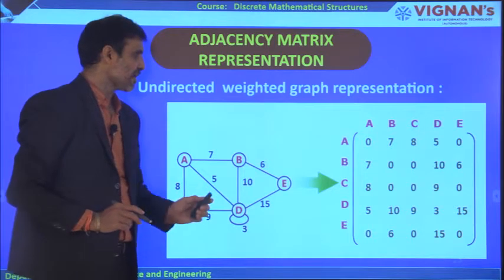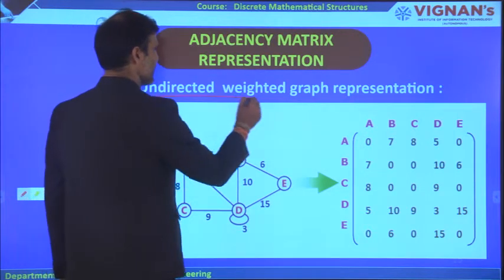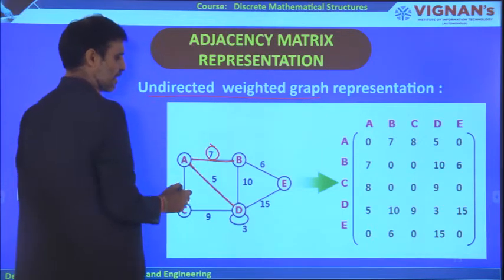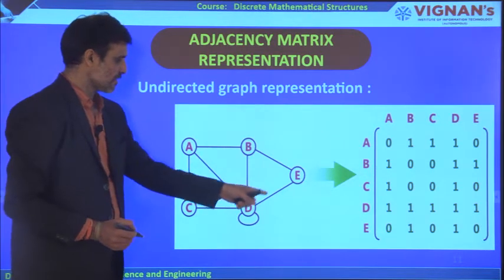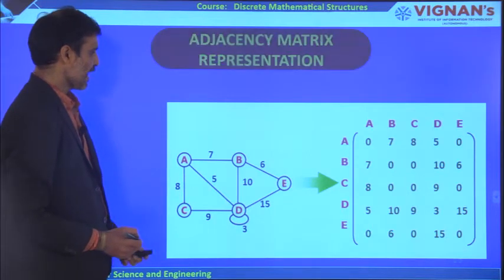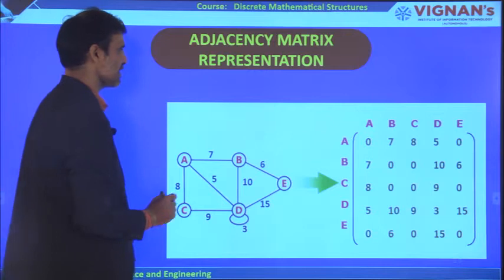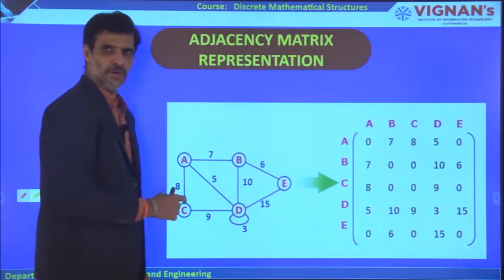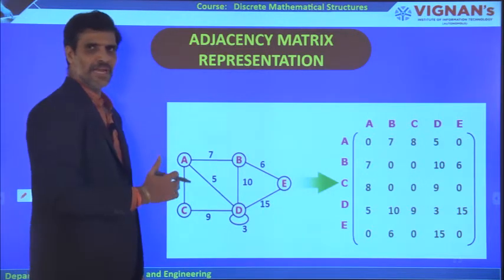Now let us look at adjacency matrix for a weighted graph. A weighted graph is one where each edge has a weight value. In a non-weighted graph, we put 1 or 0. In a weighted graph, instead of 1 and 0, we put the actual weight value of that edge. For example, A to B with weight 7 gives A[A][B] = 7, and since it is undirected, B to A = 7 as well.